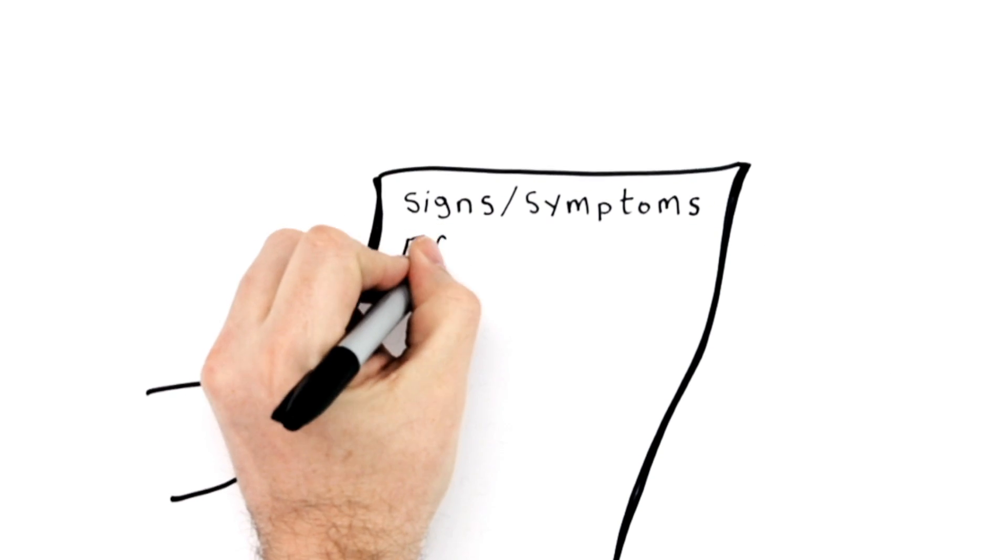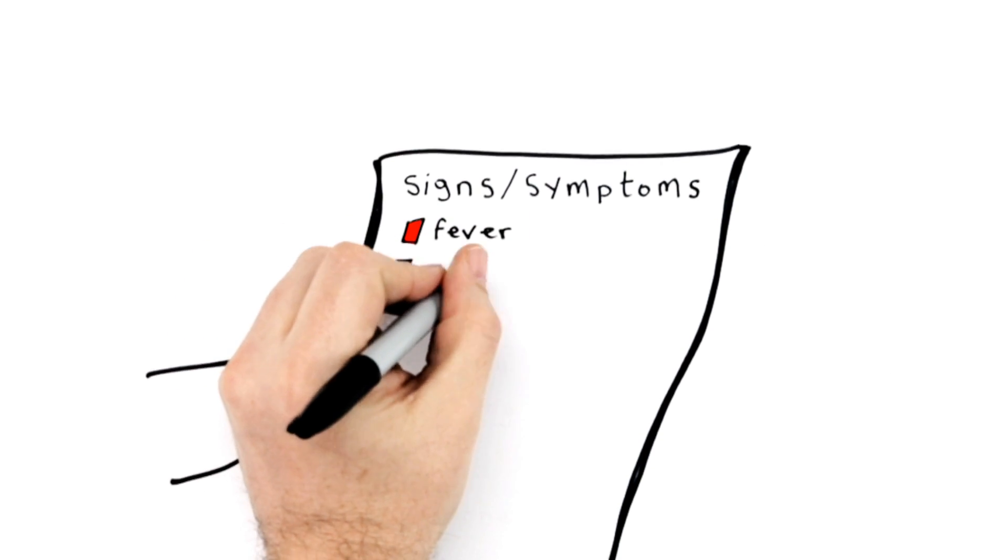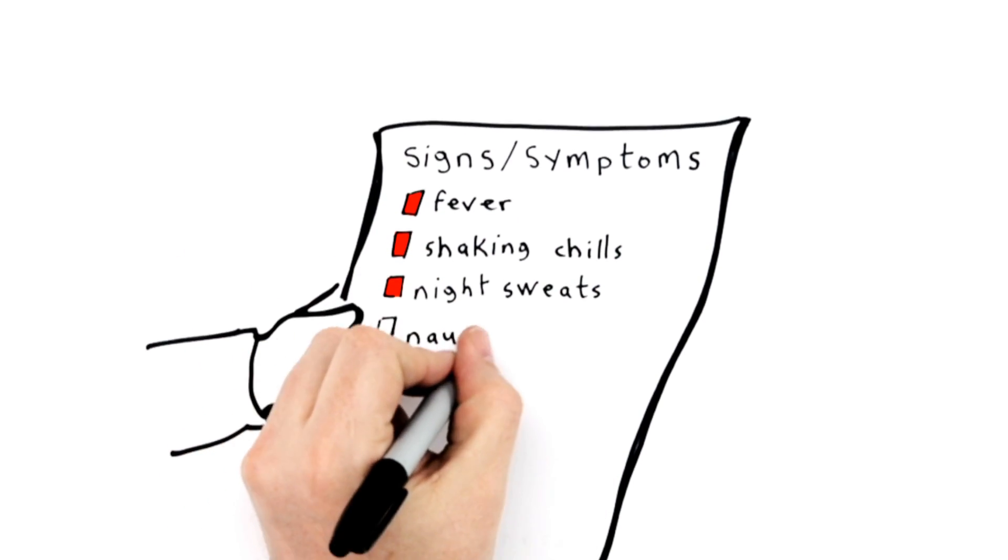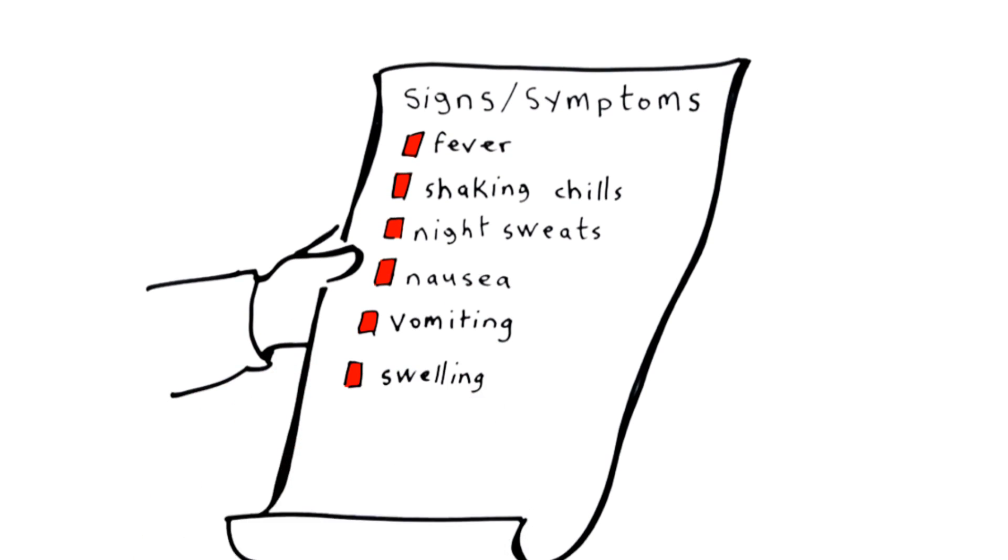In addition to fever, signs of FN may include flu-like symptoms, shaking chills, severe night sweats, nausea and vomiting, swelling or headache or neck stiffness.